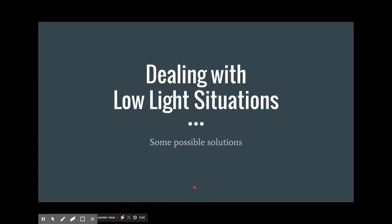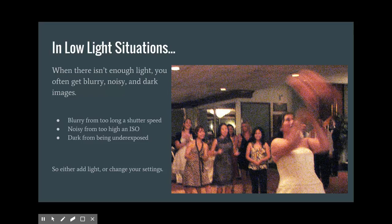In this video we're going to talk about dealing with low-light situations because they can be very frustrating and end up in underexposed photos, blurred motion, or a whole host of problems including focusing issues. Sometimes in low-light situations there's not enough light and you get blurry, noisy, and dark images — blurry from too long a shutter speed, noisy from too high an ISO, or dark from being underexposed. So you either have to add light or change your camera settings.